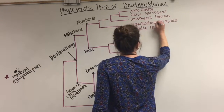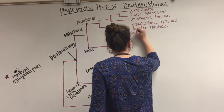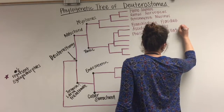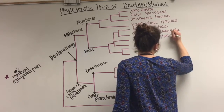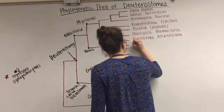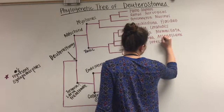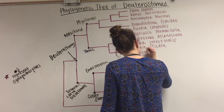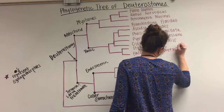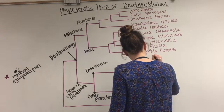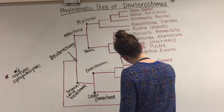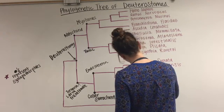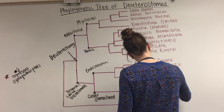Bateson placed hemichordata within the chordata phylum. In the 1940s, however, scientists became skeptical of these early observations and agreed that hemichordata only contained about half the chordata morphological features, and therefore created its own phylum, given the name hemichordata, which literally means 'half chordata.'